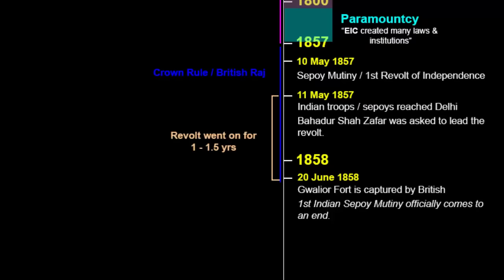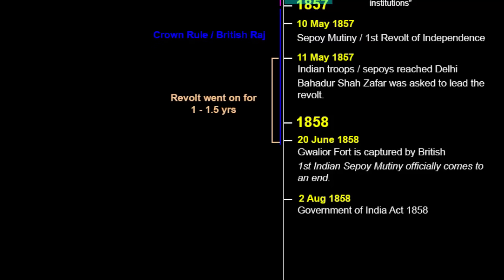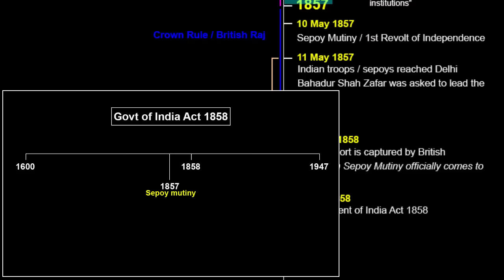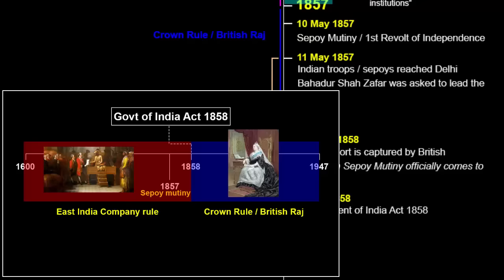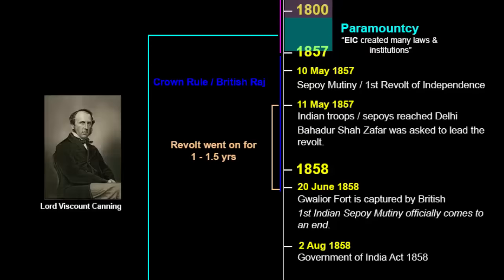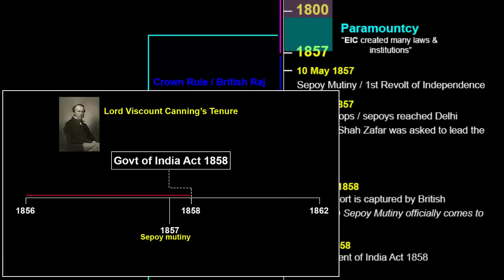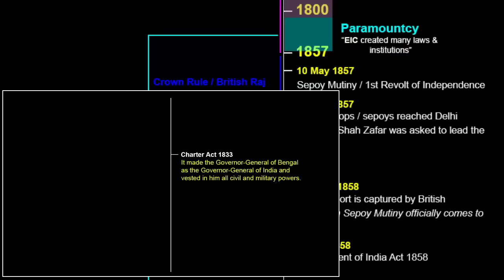The revolt of 1857 forced the British government to rethink its ruling policies. On 2nd August 1858, the British Parliament passed the Government of India Act 1858, under which the East India Company was formally dissolved and its ruling powers were transferred to the British Crown — the era of the new British Raj began. During this time, the Governor General and Viceroy of India was Viscount Canning, or Lord Canning. The term Viceroy came from the Government of India Act 1858, changing the name from Governor General to Viceroy.